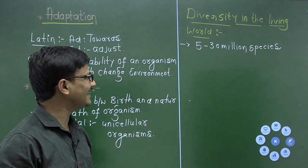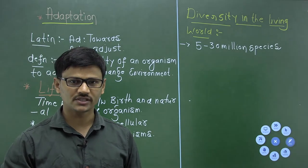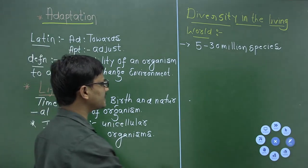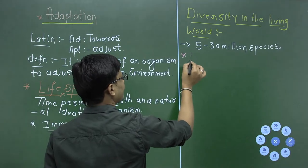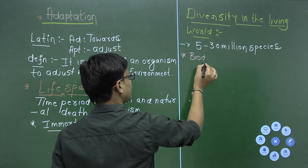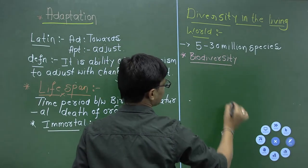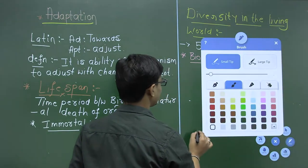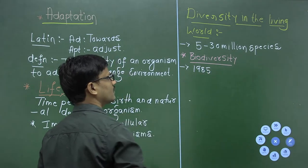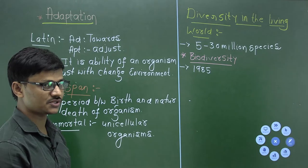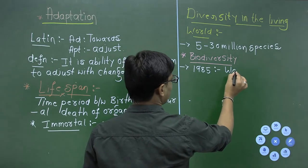There are millions of species on earth and all these different kinds of species together are called biodiversity. The term biodiversity was first used in the year 1985 by two scientists — Walter and Rosen.